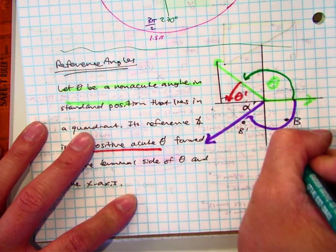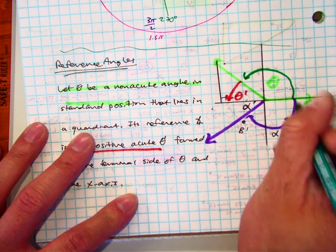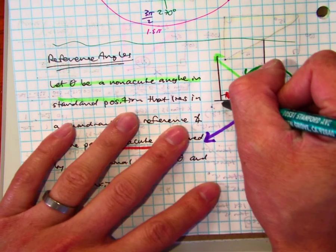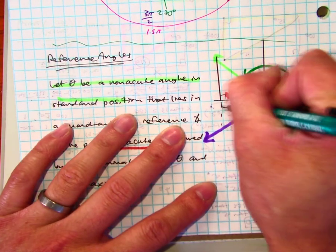Alpha prime. So here is alpha, the angle, and the reference angle is alpha prime. The reason why is that, again, you're forming the triangle in this direction.